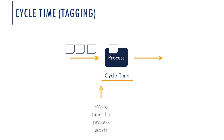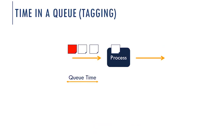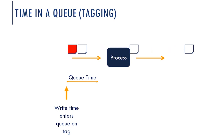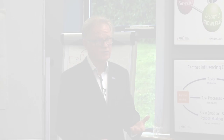For cycle time tagging, write the time the process starts and the time the process finishes, and you can get the cycle time from that. For queue time, write the time it enters the queue and the time it starts processing on the tag. You write the time directly on the actual tag — a very straightforward technique.